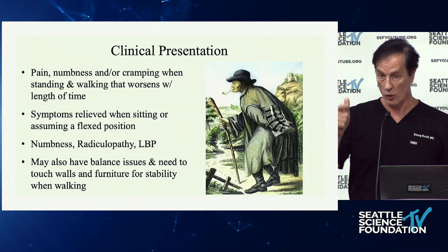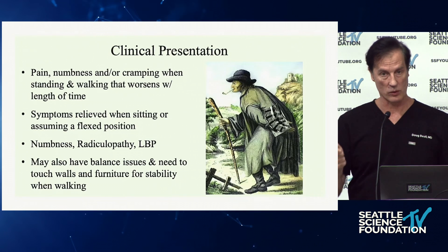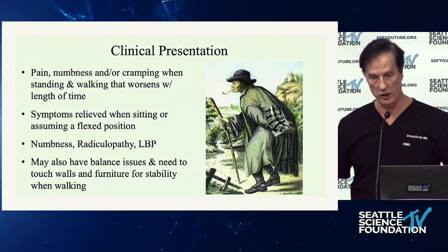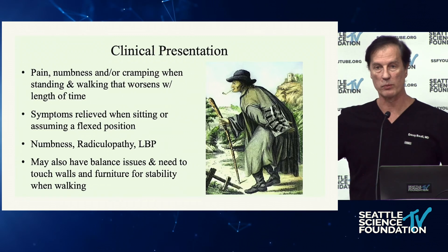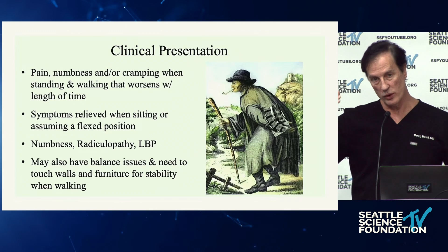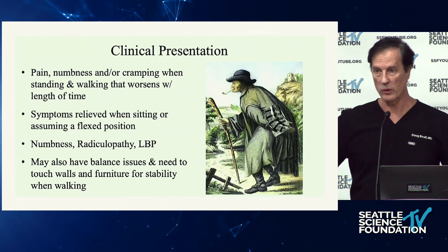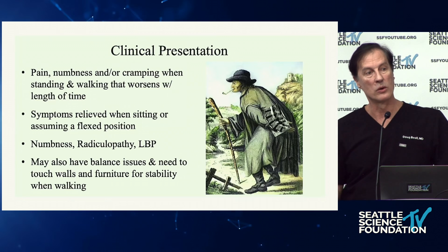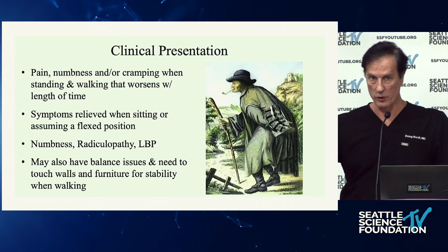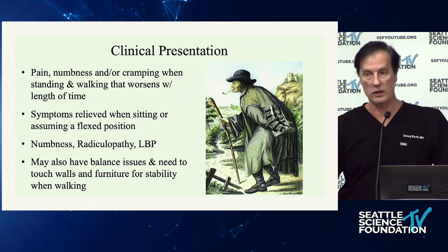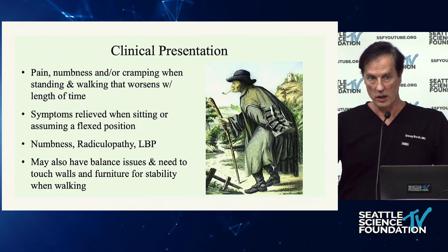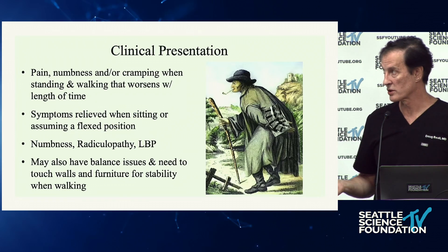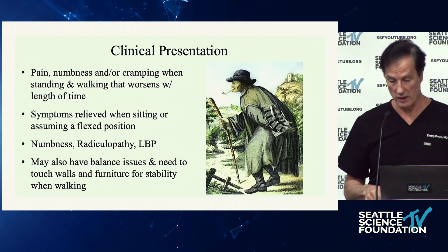Pain with standing and walking — the more you walk, the worse it gets. It's relieved with sitting down or stopping, especially with forward flexion. When it gets severe, people have to put their hands on chairs or walls to stabilize because they lose their proprioception. A good rule of thumb: by the time you start to get leg weakness with spinal stenosis, you have about six months before that neurologic deficit becomes permanent. So about six months to decompress.